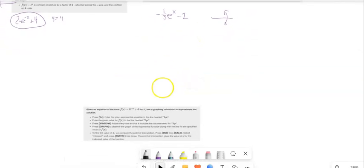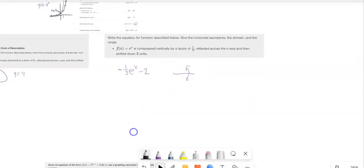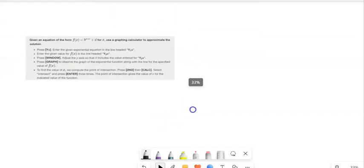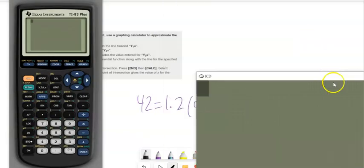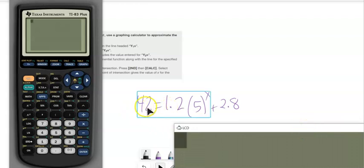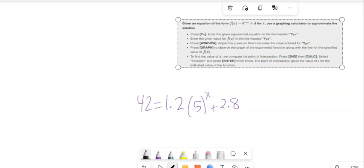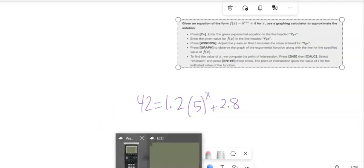And the nice thing about the graphs is I can use them to solve, to solve equations. And I can use my graphing calculator for it, which is kind of cool. So I'm going to have some equation 42 equals 1.2 times 5 to the x plus 2.8. And I want to solve this. And right now I don't have necessarily like all of the algebra tools to solve this. But I can use my graphing calculator for it. And I can use Desmos too. I'll show that in a minute.